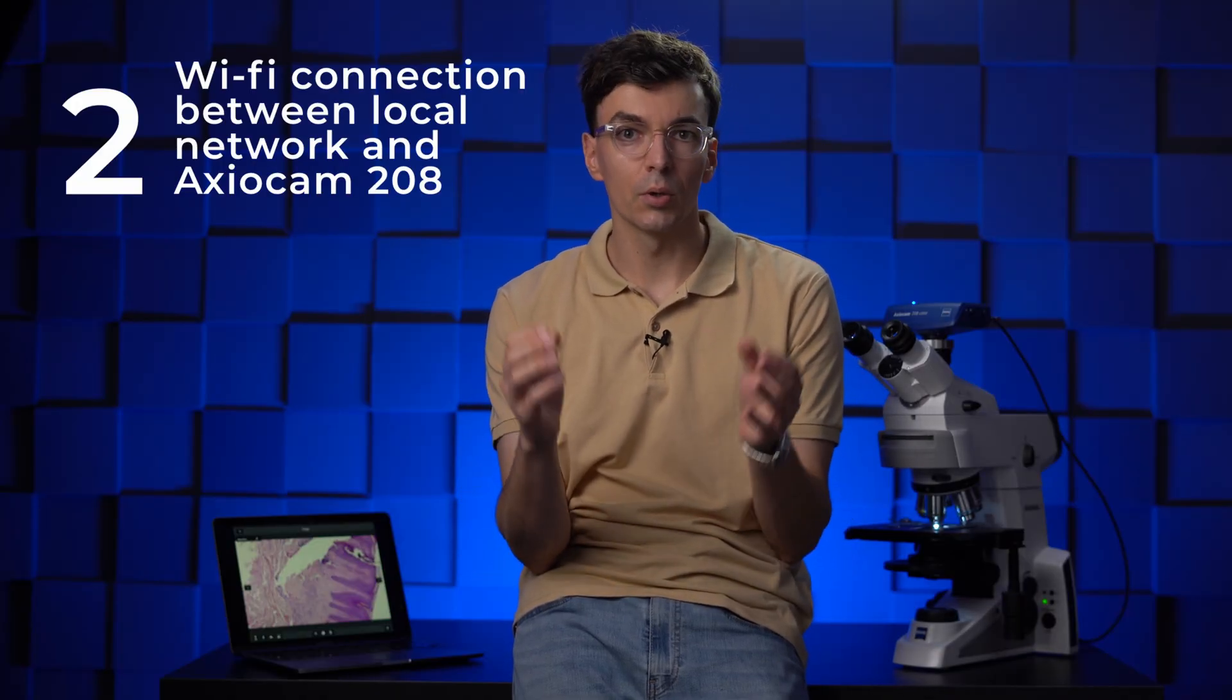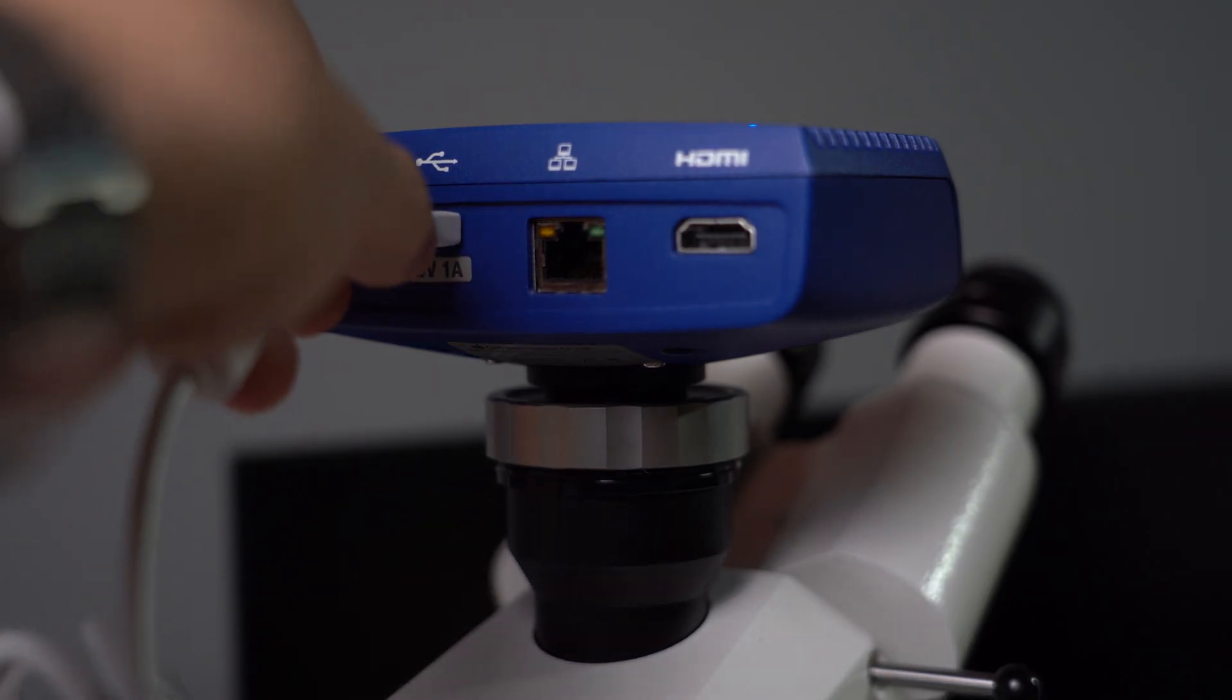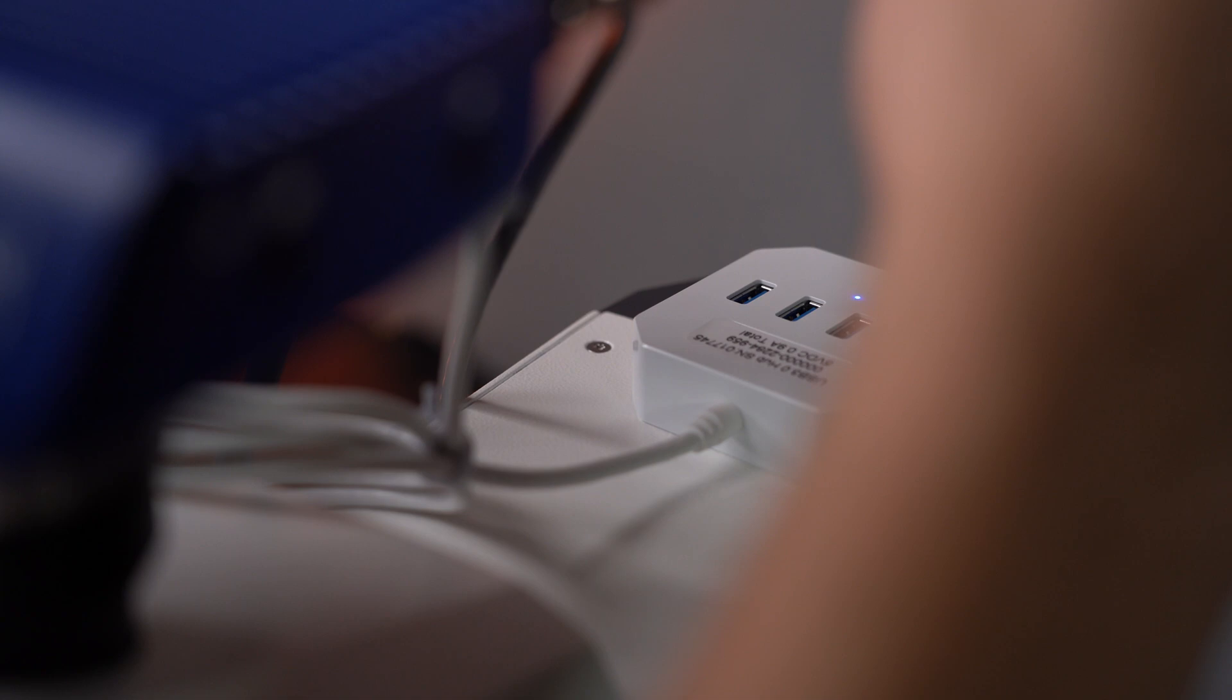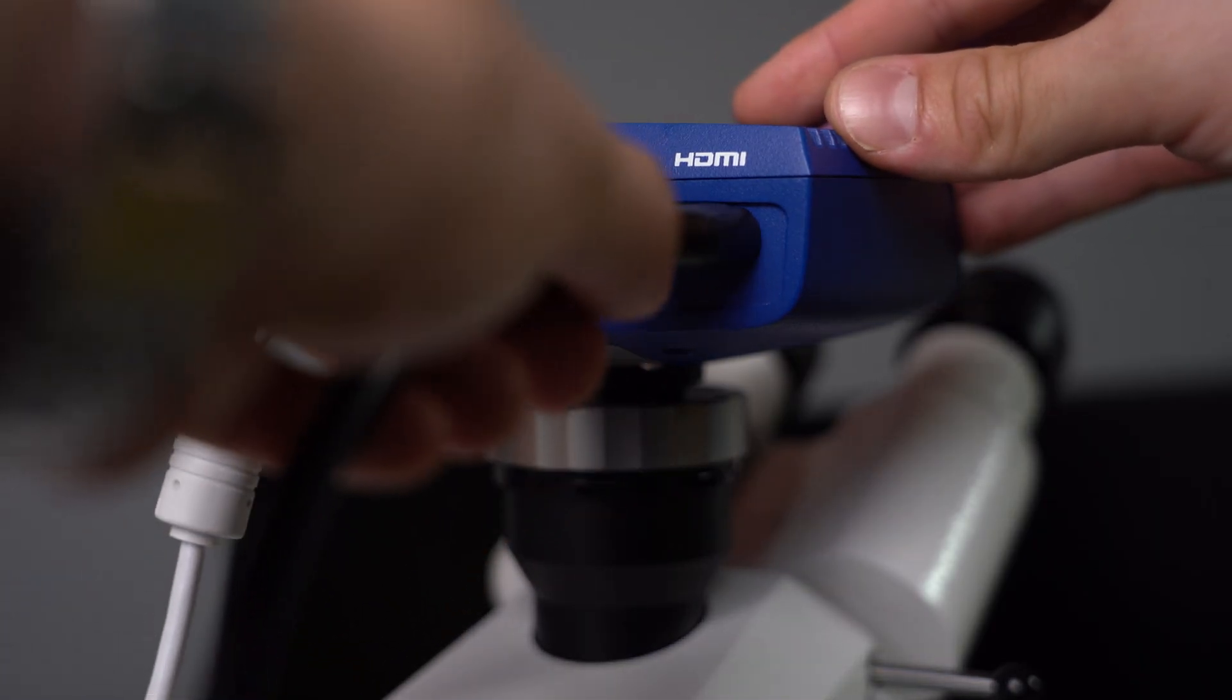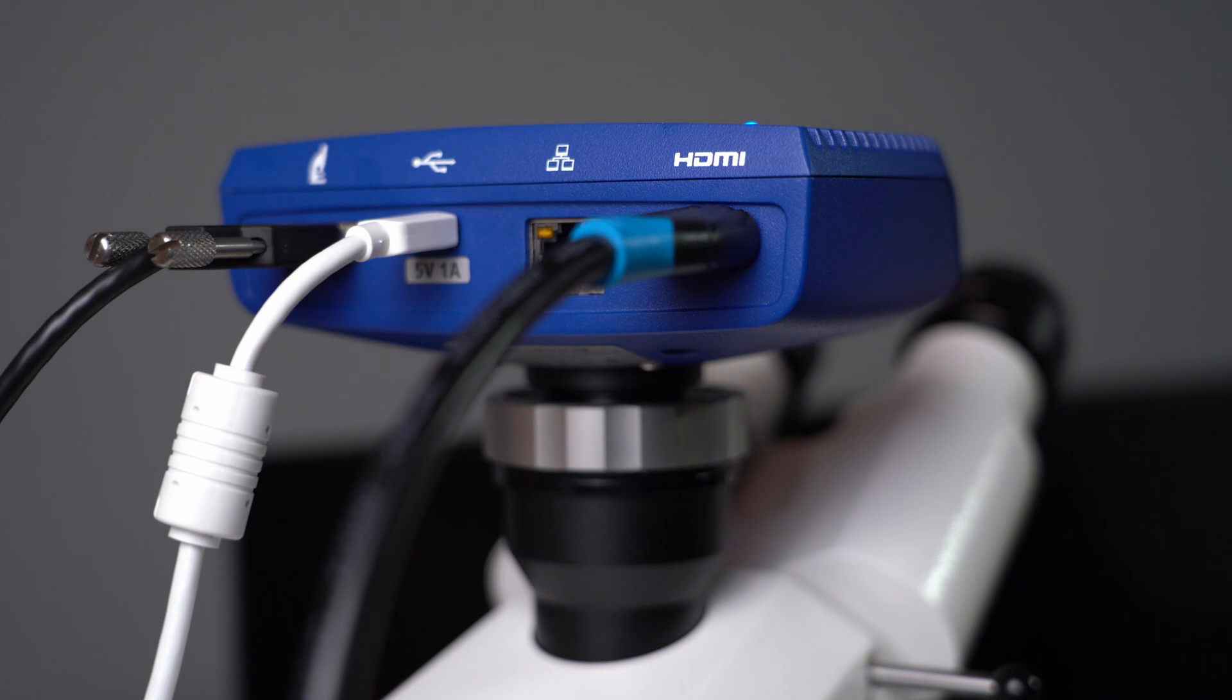The second option is similar but we will use a Wi-Fi connection between your local network and Axiocam camera. First of all, connect the USB-C hub to the camera and plug in your Wi-Fi adapter and mouse to the hub. After that we need to connect the camera directly to the monitor using an HDMI cable.